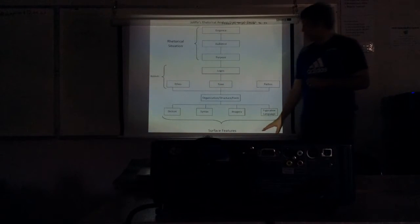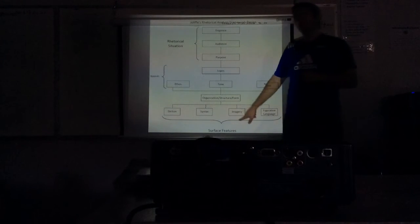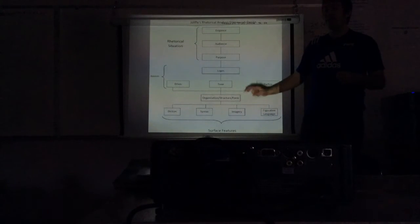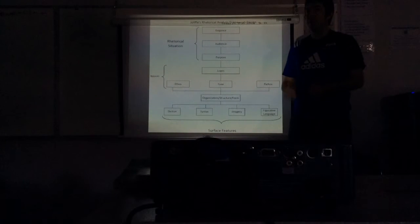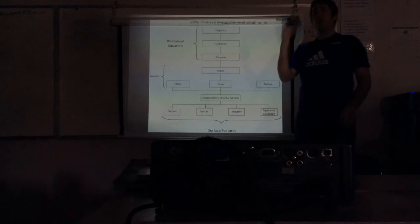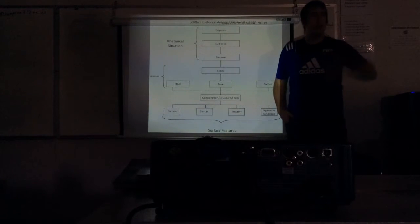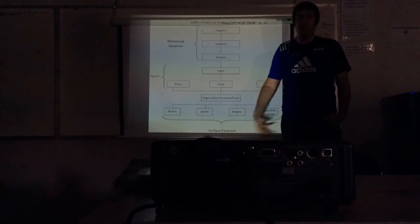All right. Surface features. Now we've talked about these. The three obvious ones are going to be diction, syntax, and imagery. Now, when we talk about diction and syntax and imagery, these should be like your supporting surface features. They shouldn't be your main features. I don't want to spend an entire body paragraph talking about diction. The author used this word here and this word here, and here's why they use this word here, right? Those should be supporting concepts.